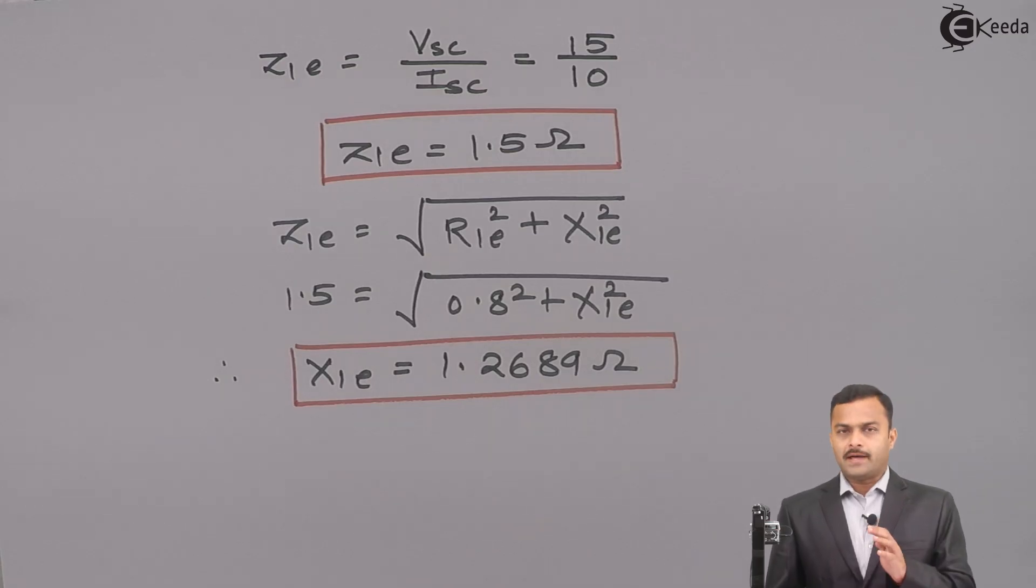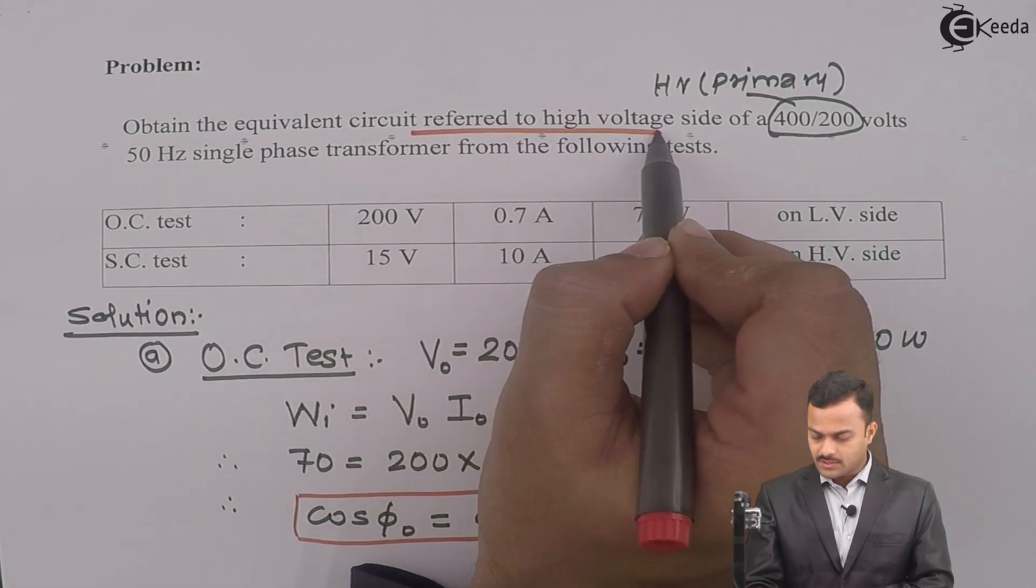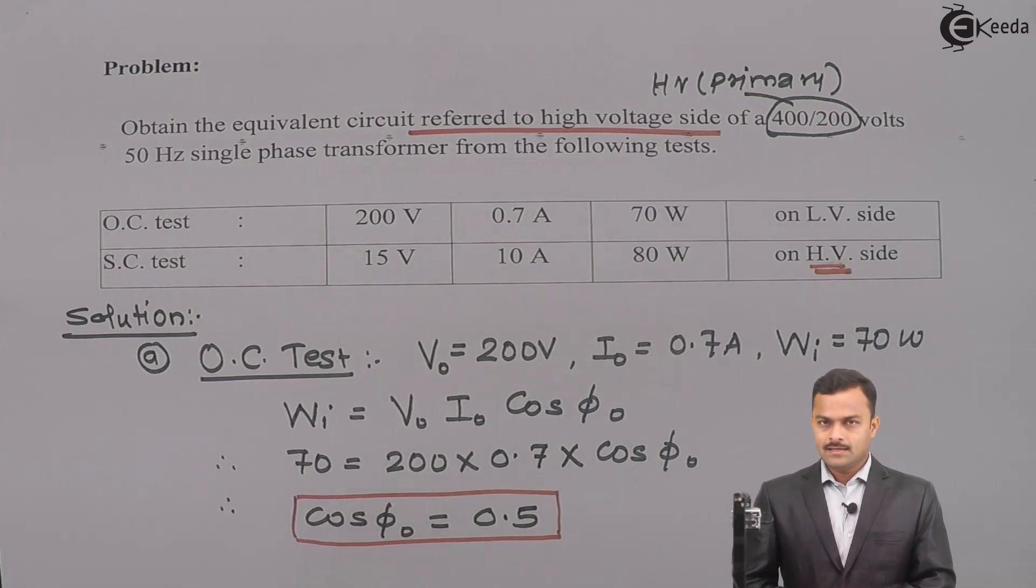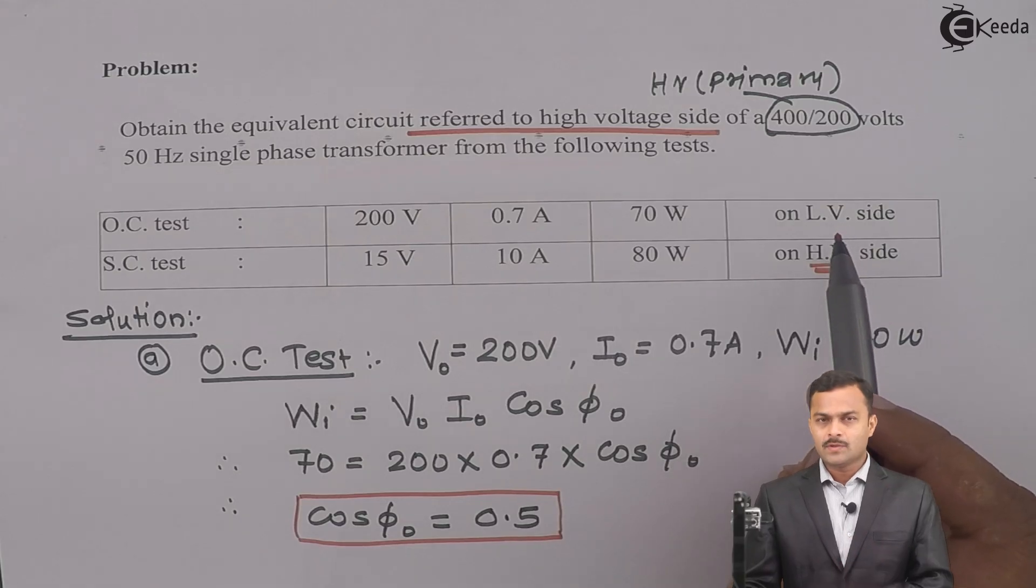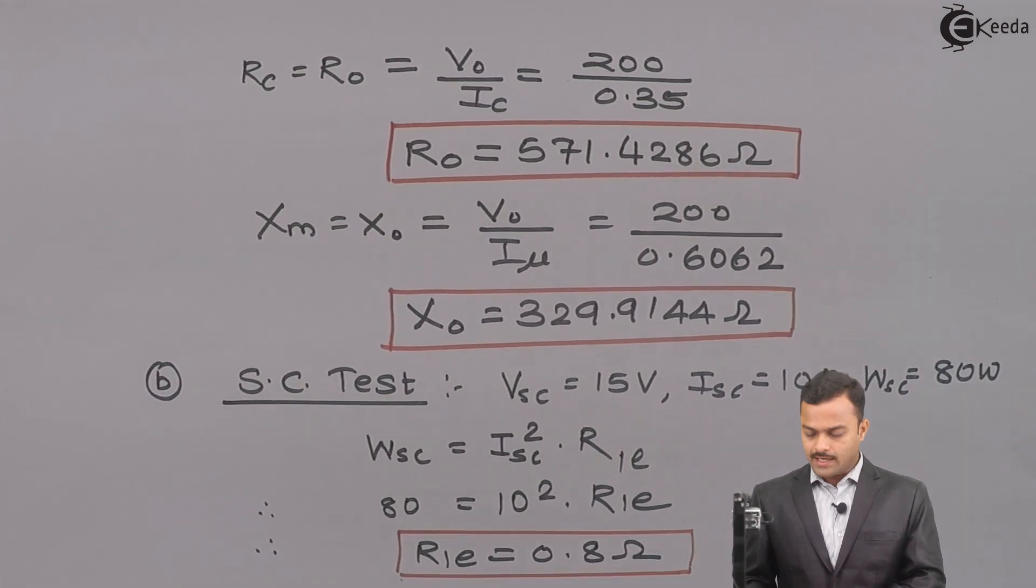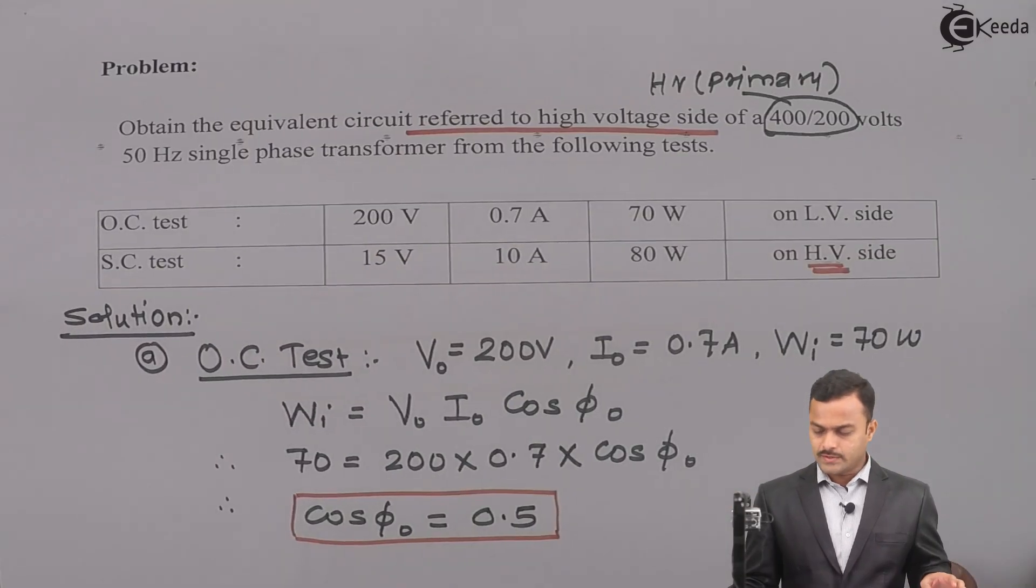Now, thing is that we are getting four parameters. Two from open circuit test and two from short circuit test. But what happened if you see the problem carefully, open circuit test is performed on low voltage side and short circuit test is performed on high voltage side. And what they have asked, obtain the equivalent circuit referred to high voltage side. So thing is that whichever test we perform on high voltage side, those parameters will remain as it is. But suppose we have performed another test with some different side. For example, here, OC test we perform on low voltage side. So we need to refer that side parameters to the HV side. Here, through OC test, we got R0 and X0 like this. But that is at the low voltage side. We want equivalent circuit at the high voltage side. So we need to refer this R0 and X0 on HV side.